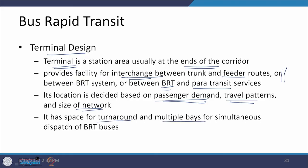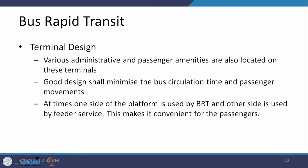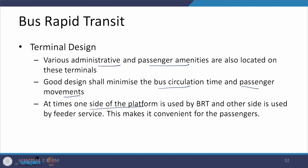Various administrative and passenger amenities are also required at the terminal. Reducing bus circulation time and passenger travel distances between different systems makes for a good design. One side of a platform can be used for BRT and another side for feeder services, which minimizes passenger movement requirements and becomes quite convenient.